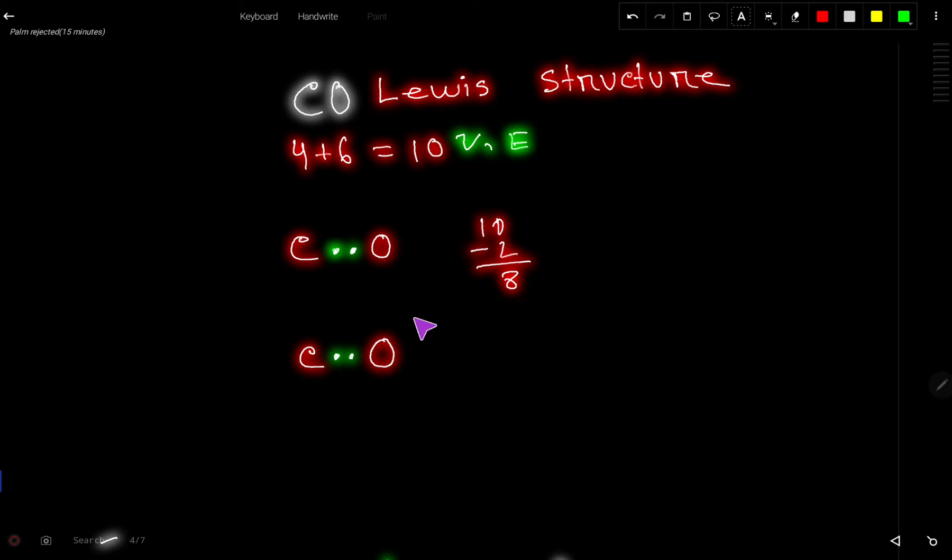The outer atom is oxygen, so let us put six. Oxygen has two, so it can take maximum six valence electrons. Out of eight, we have used six here, so we have two left. Let us put these two valence electrons here on carbon. Now, this oxygen has 2, 4, 6, 8, but carbon only has 2, 4.